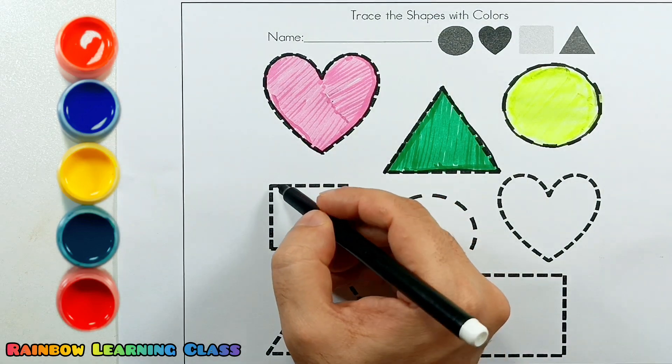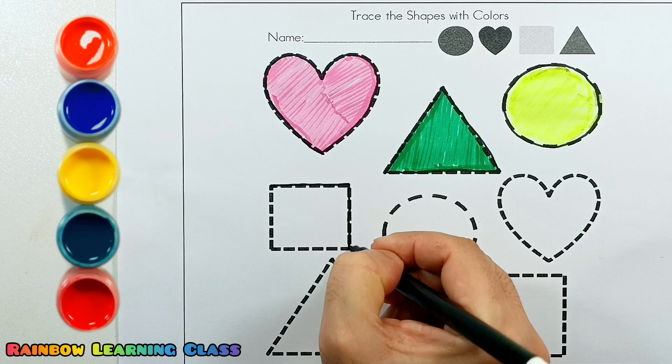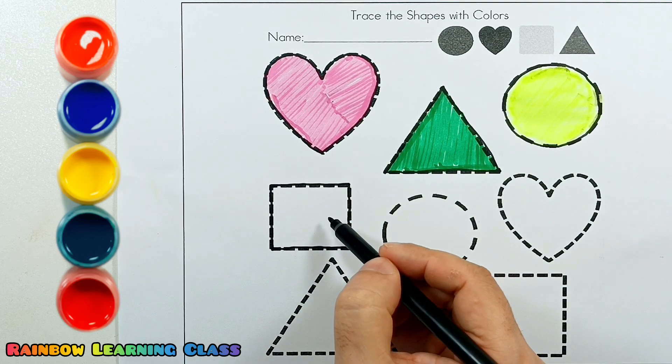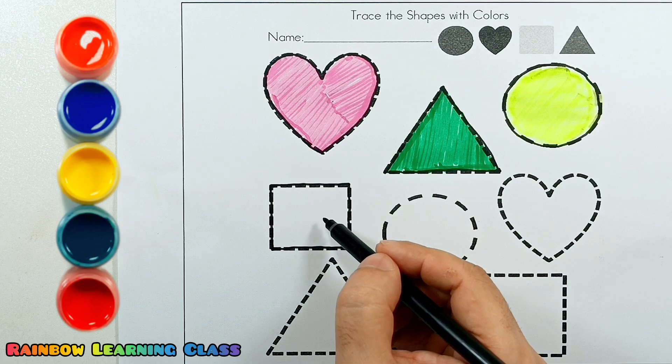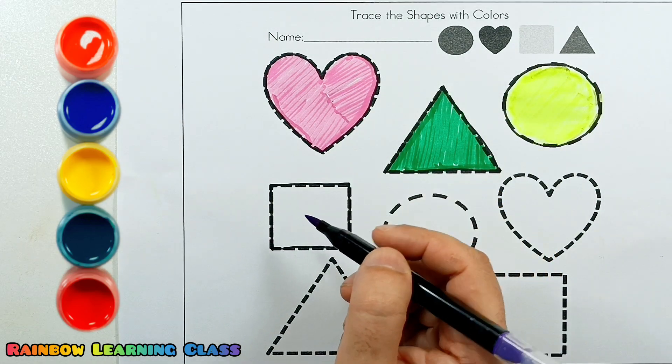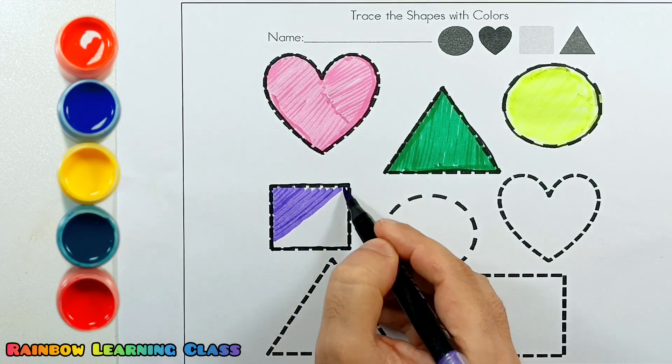Next shape: square. One, two, three, four. Square has four corners. Square, purple color. Square is purple color.